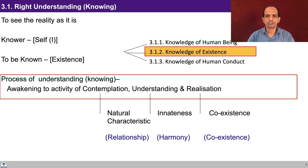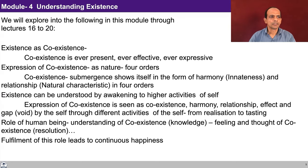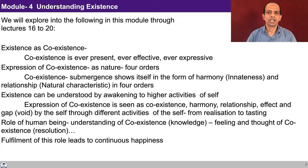Ultimately, we have to see the relationship, harmony, and coexistence as it is. In module 3, we tried to understand the human being in depth and detail — we looked into the activities, needs, and potentiality of the self, and we also saw how happiness can be ensured in continuity. In this module, we are going to talk about nature and existence. Through lectures 16 to 20, lecture 16 is existence as coexistence — we'll try to see how coexistence is ever-present, ever-effective, ever-expressive.